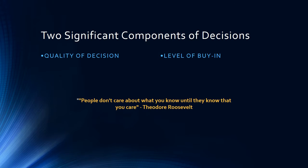There are two significant components of leaders' decisions: the quality of the decision and the level of buy-in associated with it. Team members want to make sure that the leader has enough information to make a wise decision in order for those team members to buy into that leader. In order for team members to buy in, they need to feel a part of the process — you can allow team members to have input in the decision-making process, but ultimately make your own decision.